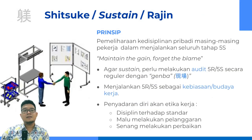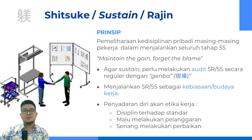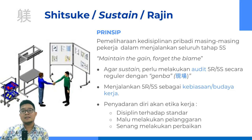S yang kelima adalah Shitsuke atau Sustain, dalam hal ini artinya adalah Rajin. Prinsipnya adalah memelihara kedisiplinan pribadi masing-masing pekerja dalam menjalankan seluruh tahap 5S ataupun 5R ini. Agar sustain, biasanya untuk penerapan rajin ini dilakukan audit secara reguler dengan metode Genba. Genba berarti turun langsung ke lapangan untuk melihat kondisi yang sebenarnya. Rajin berarti menjalankan 5R atau 5S ini sebagai kebiasaan ataupun budaya kerja, sehingga kita menyadarkan diri akan etika kerja, yaitu disiplin terhadap standar kerja, malu untuk melakukan pelanggaran, dan senang untuk melakukan perbaikan.